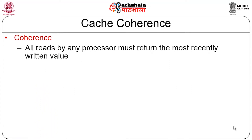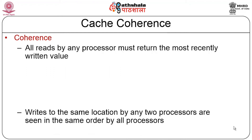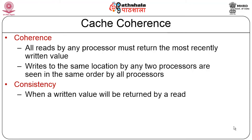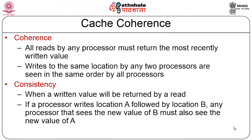Cache coherence means all reads by any processor must return the most recently written value, and writes to the same location by any two processors must be seen in the same order by all processors. Consistency means when a written value will be returned by a read. If a processor writes location A followed by location B, any processor that sees the new value of B must also see the new value of A. Coherence is about what data is being read when it is modified by some other processor; consistency is about when a processor reads the value, will it get the correct data.